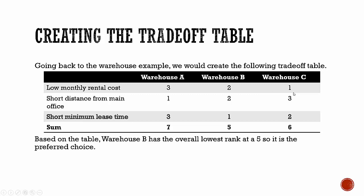Warehouse C had the lowest monthly rental cost. Warehouse A had the shortest distance from the main office, and warehouse B had the shortest minimum lease time. So none of these are universally inferior — each one is superior in some way to the others. Without weighting them, we would choose the one with the lowest sum, which would be warehouse B, giving it the overall lowest rank as the preferred choice.